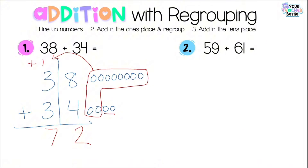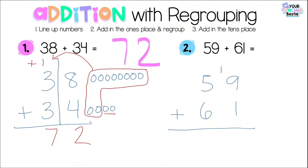For practice number two we have 59 plus 61. Step one: rewrite the problem vertically — 59 plus 61 — with a line down the middle. Step two: add in the ones place and regroup. I have 9 plus 1, which equals 10. I'll draw it out so you can see — I draw 9 ones and 1 one and group them together to make a ten.